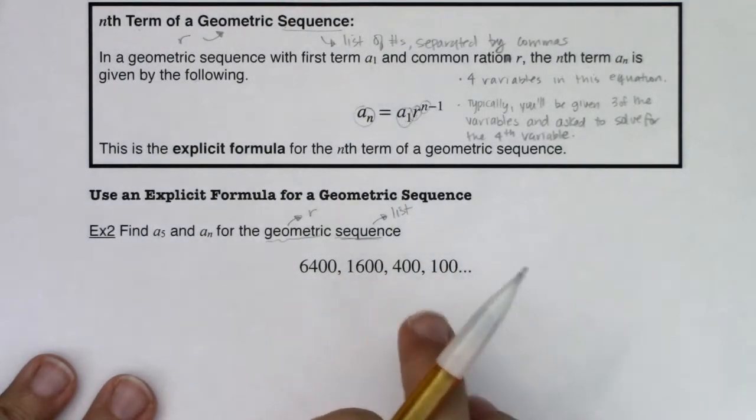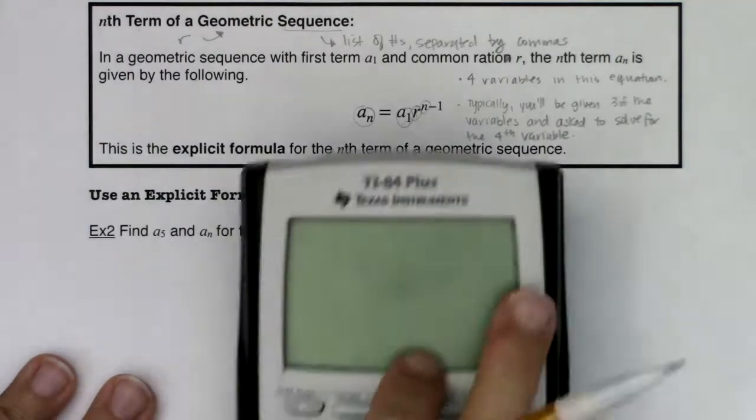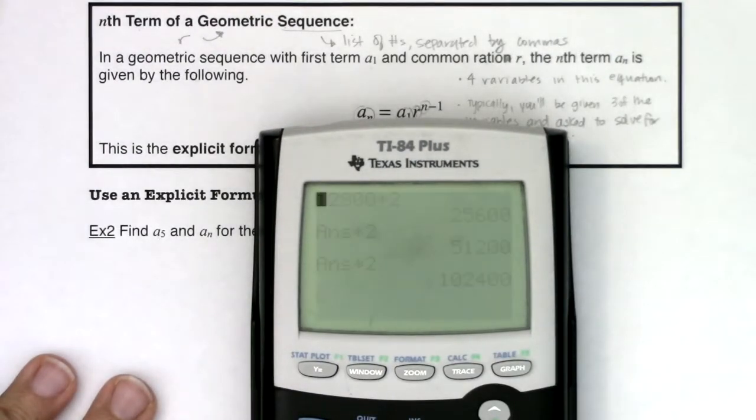I see 6,400 to 1,600 to 400 to 100. So let's first discuss why this is not arithmetic. If this was arithmetic, we would take our second term, 1,600, and subtract our first term.